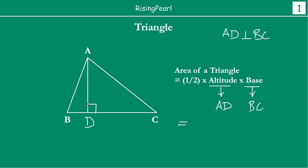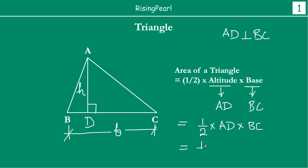Sometimes we represent the altitude — the height — with the lowercase letter h, and the base, which is BC, we represent with the lowercase letter b. So then, the area of a triangle becomes half times AD times BC, or sometimes we write it as half times height times base. Now, friends, this formula is not a new formula — you have seen this formula many times, and we have also proved this formula in an earlier series. So, to find the area of a triangle using this formula, we must know the height and the base.